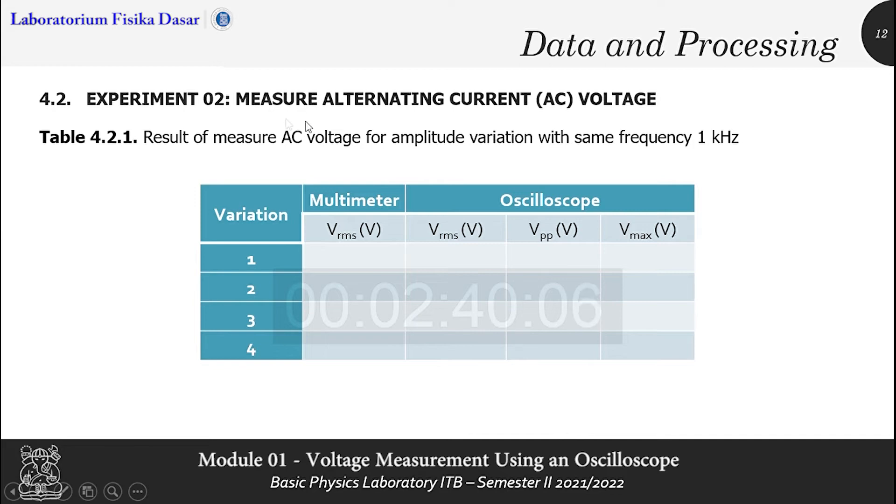Next, experiment 2 is measure alternating current or AC voltage. From this experiment, part 1, for amplitude variation with the same frequency 1 kHz, you will get the data VRMS from multimeter. And from oscilloscope, you will get the data VRMS, VPPP, and VMAX.